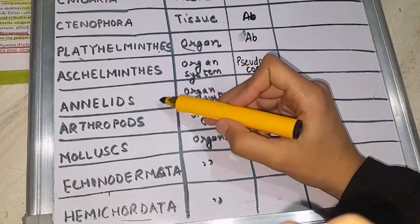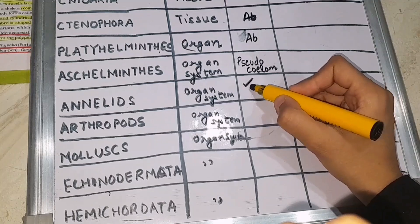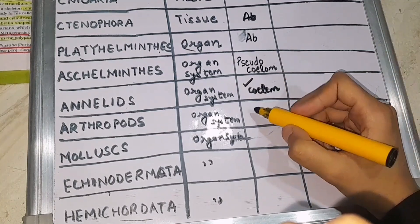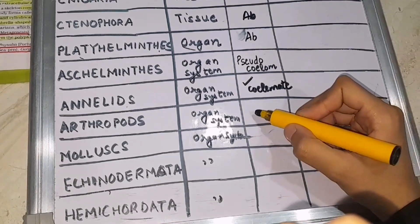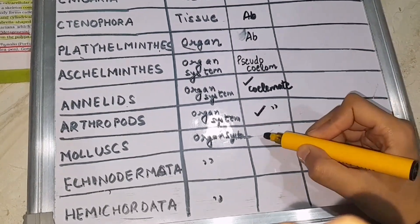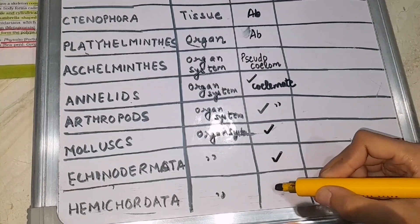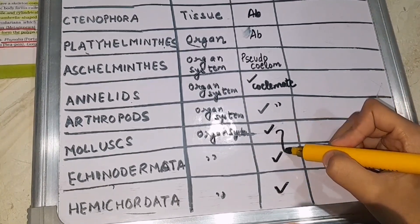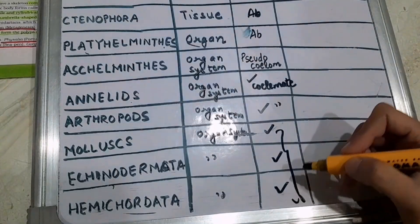Then from Annelida till Hemichordata, all have the presence of coelom in them and they are called coelomate. Echinodermata also has coelom present, and Hemichordata also present. So all these are called coelomate.